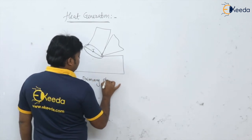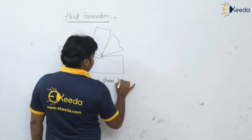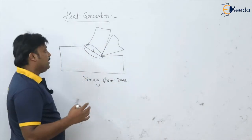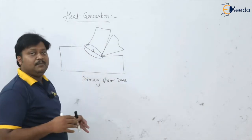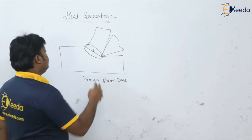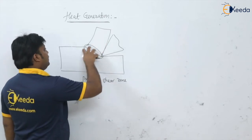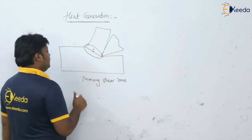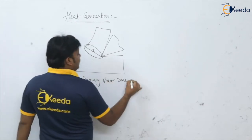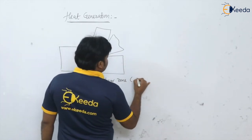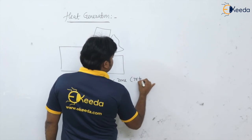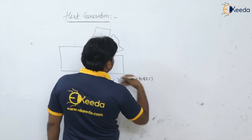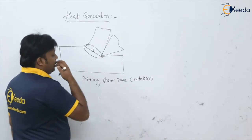The primary shear zone is the first zone where the actual breaking of the bond happens. At that time, tremendous energy is going to dissipate and we get heat in the primary shear zone of around 75 to 80 percent of the total energy supplied for this machining operation.